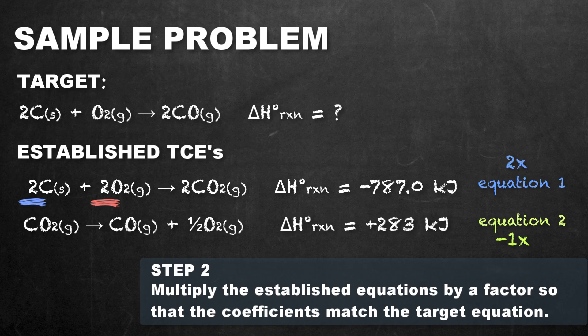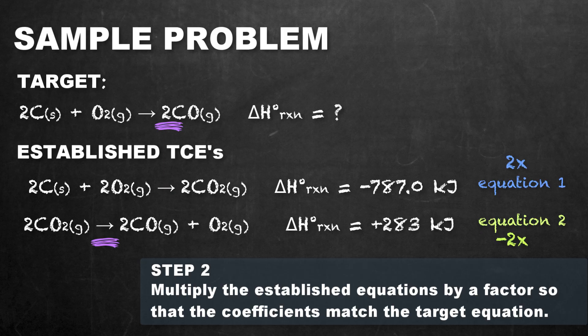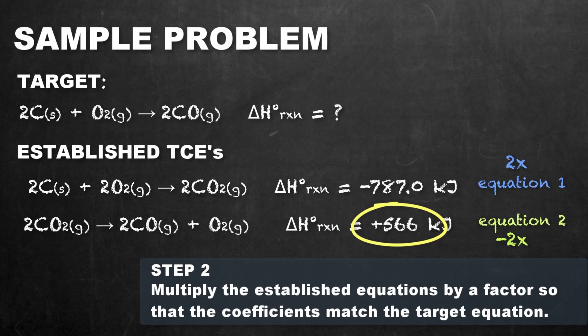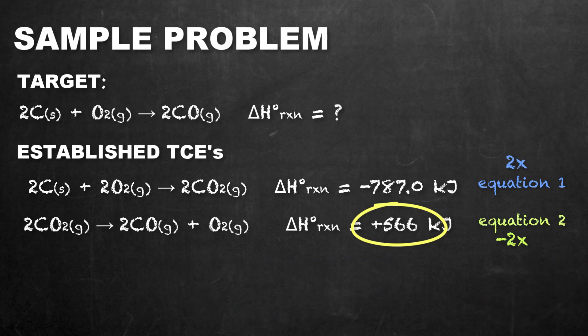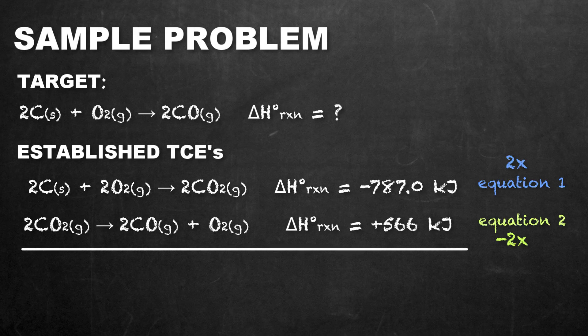We also need to double equation 2. Our target equation requires two moles of carbon monoxide, but we only have one mole being produced. By doubling it, we also double the carbon monoxide, oxygen, carbon dioxide, and the overall enthalpy change. So the enthalpy change for equation 2 has not only had its sign changed, but has also been doubled.